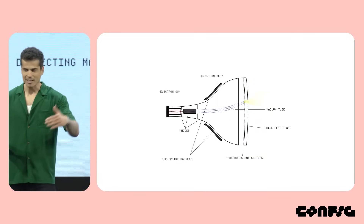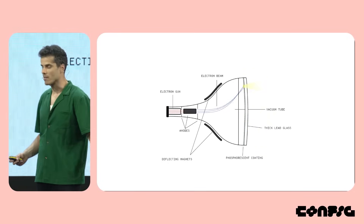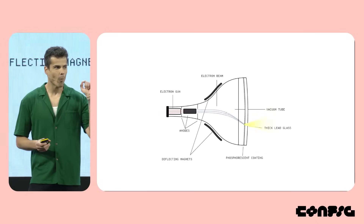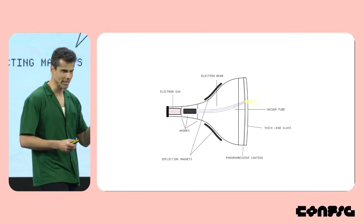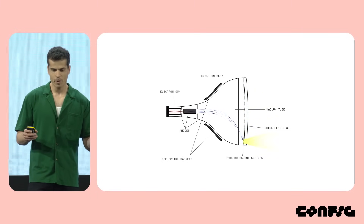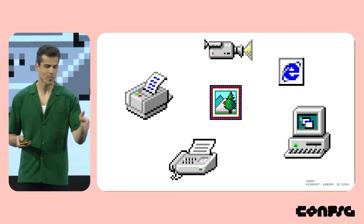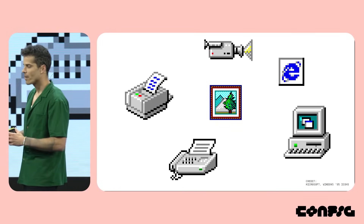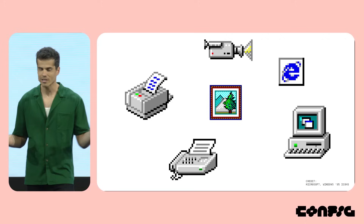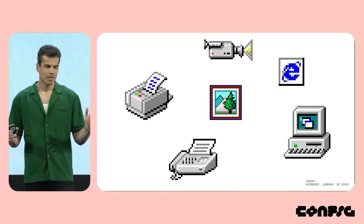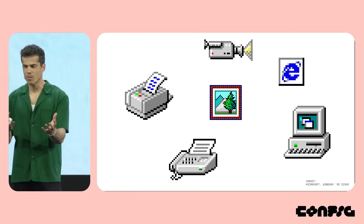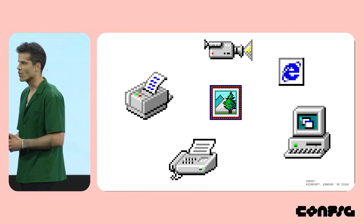The screen is coated in these tiny phosphorescent dots that glow green, red, and blue when those electrons hit them. And then they use these magnets to literally bend the beam to different parts of the screen, painting the picture one pixel at a time, 60 times every single second. It's bonkers. But what's even more bonkers was that at the time, in 1996, there was no standardized way of doing color management on digital devices.